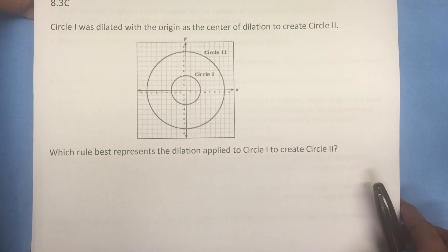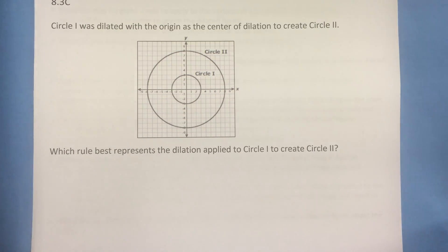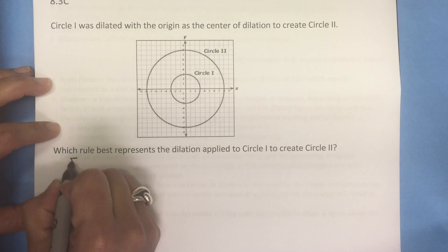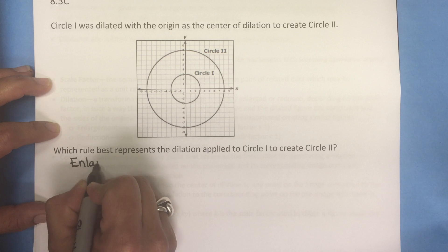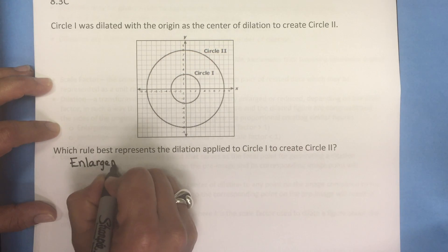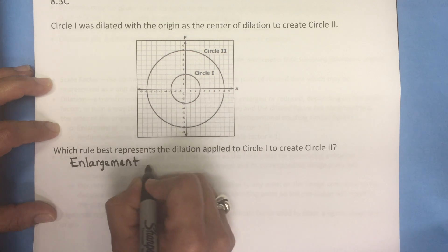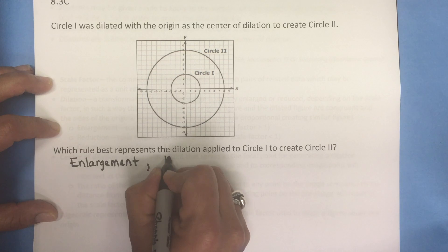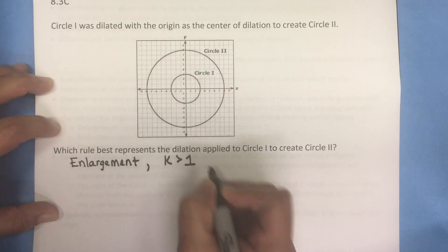Here's an example problem for this standard. Circle 1 was dilated with the origin as the center of dilation to create circle 2. Which rule best represents the dilation applied to circle 1 to create circle 2? Well we know that this dilation is an enlargement because circle 2 is bigger than circle 1. Since the dilation is an enlargement, that tells us that our scale factor or K is going to be greater than 1.